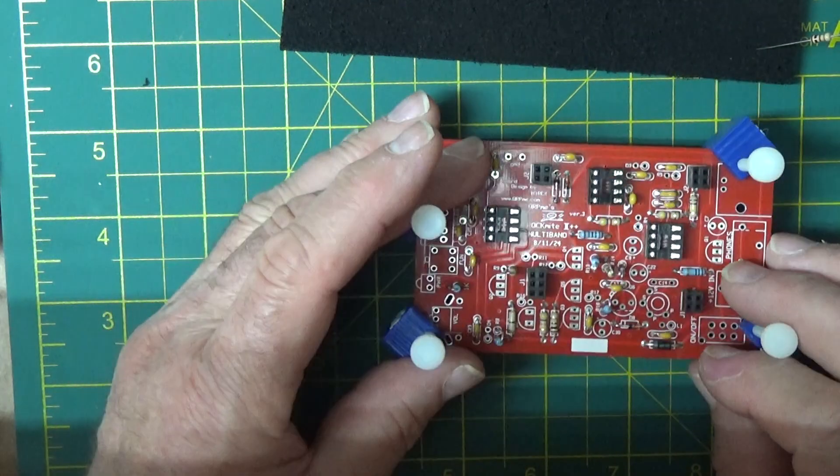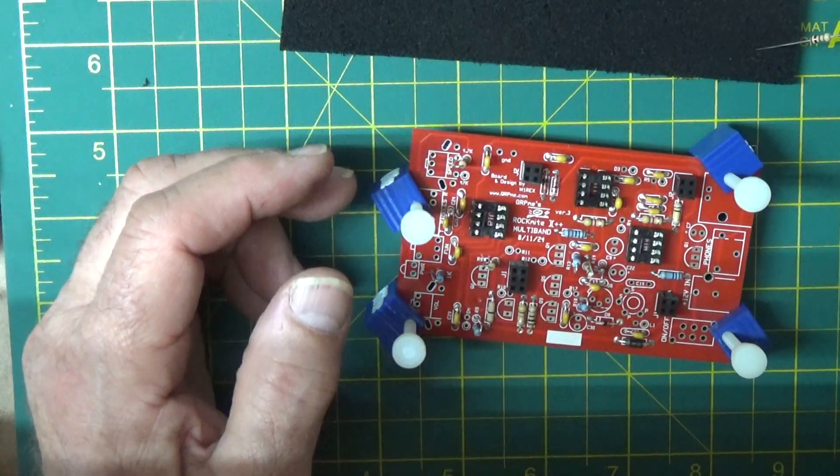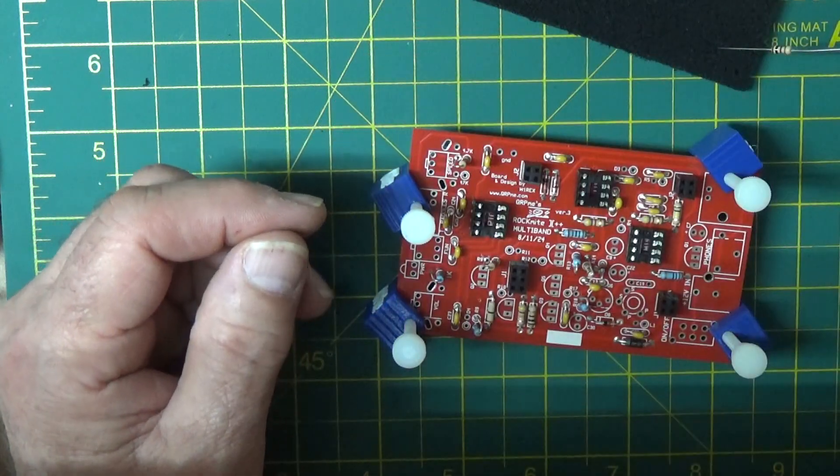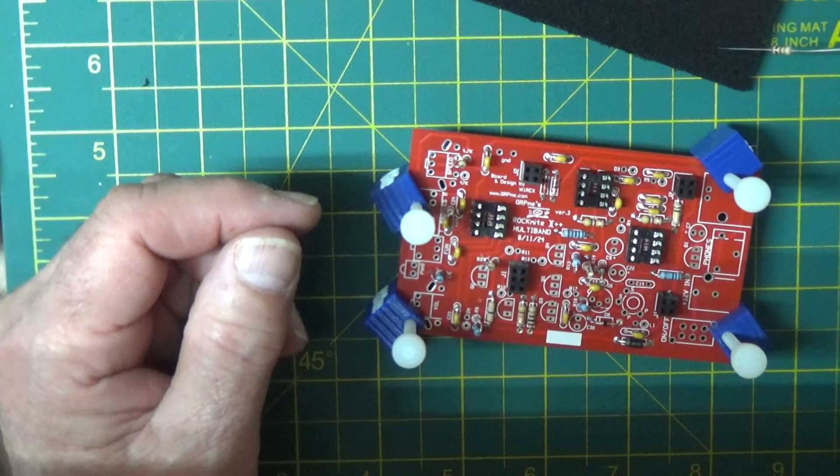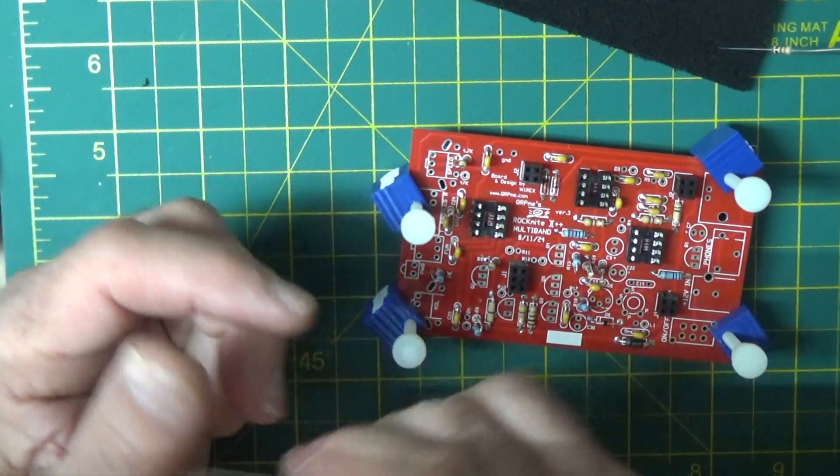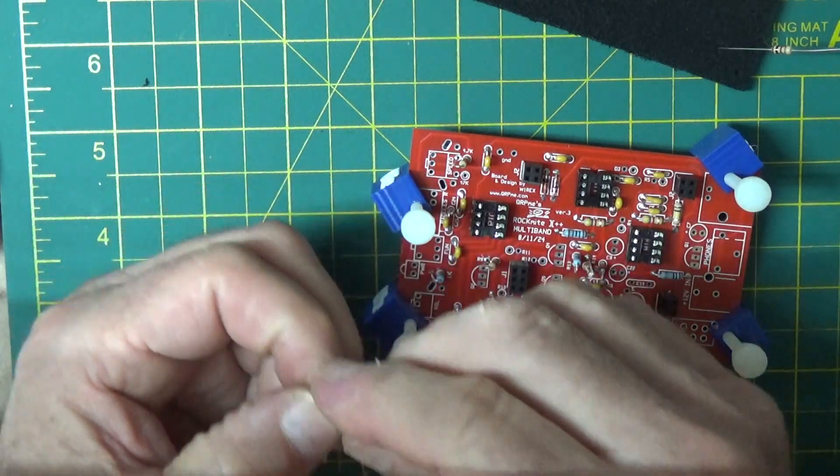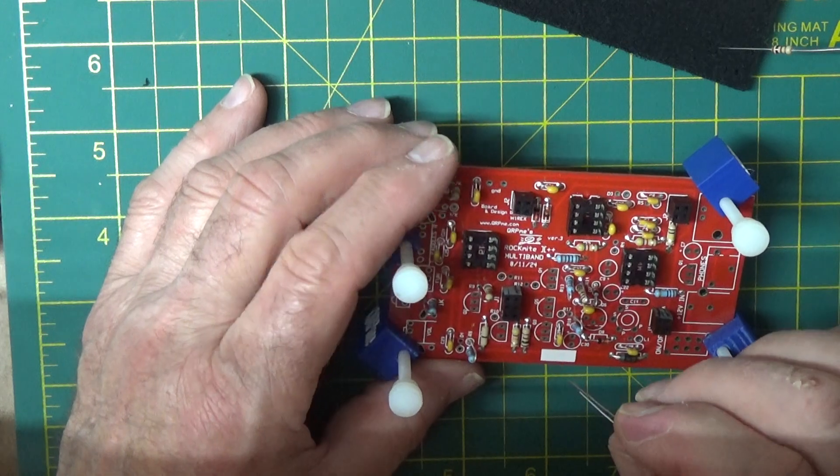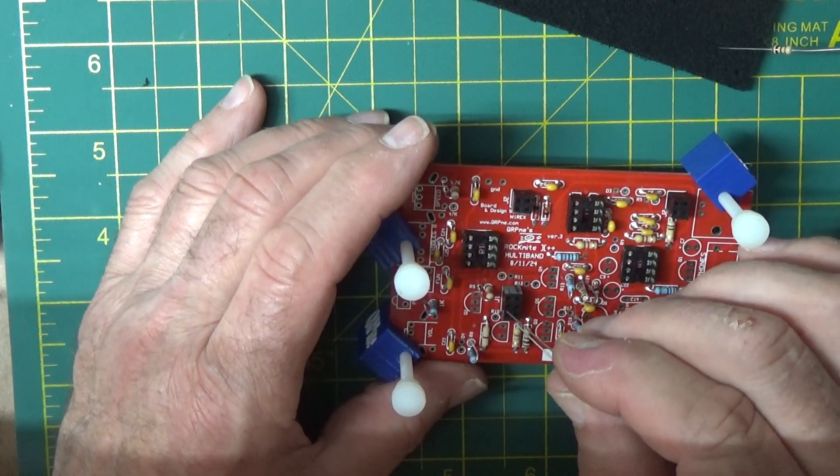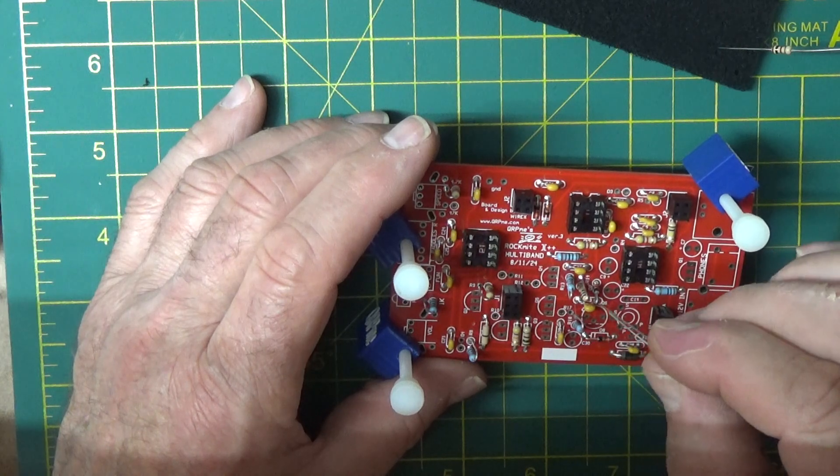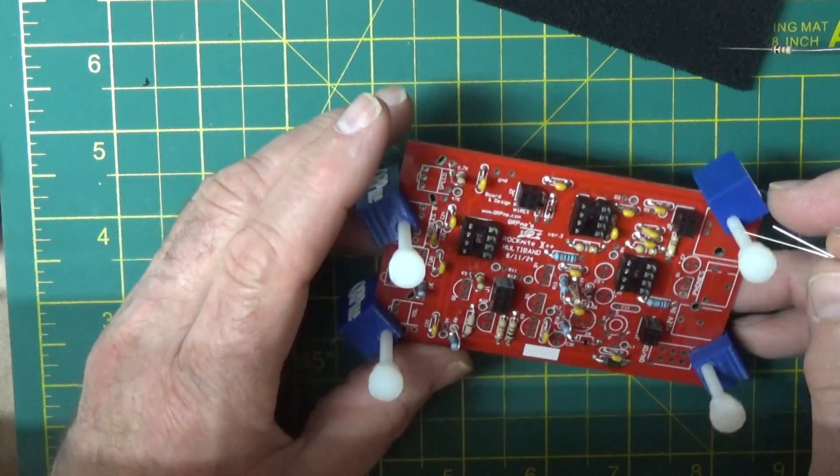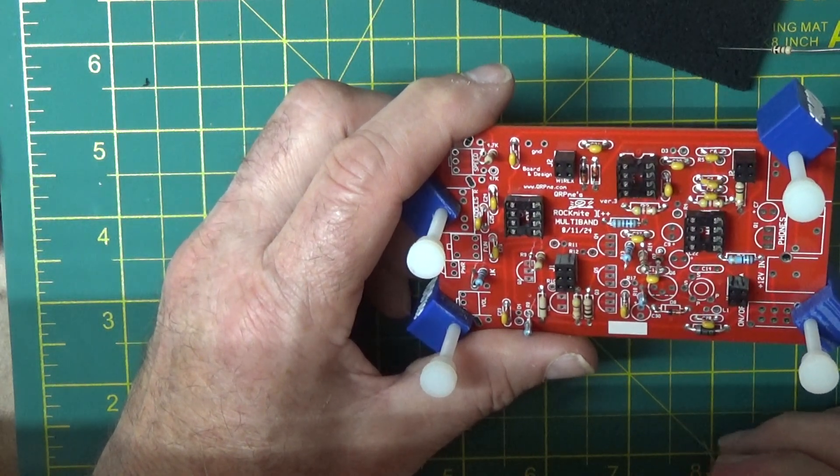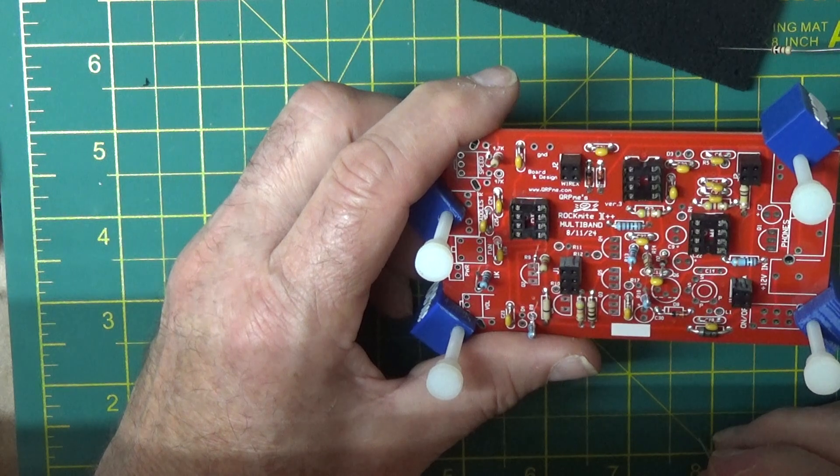Sometimes it's taking us longer to find the part than it is to actually deal with it. So next on the list is a 22K. 22K on the bill of materials says it's R12. And I stumbled across that one looking for R9. So here's R12 is 10, 9, 11. I thought it was right in there. R12.